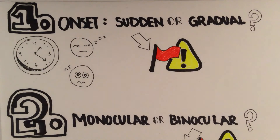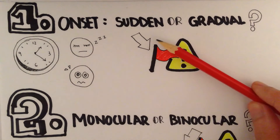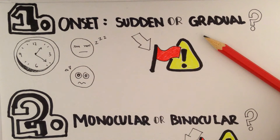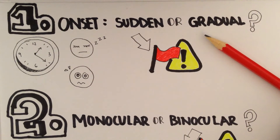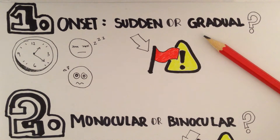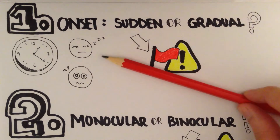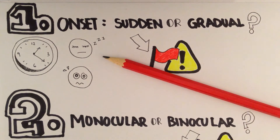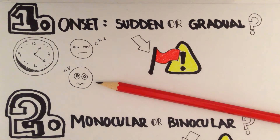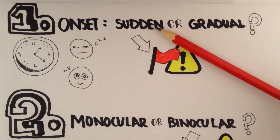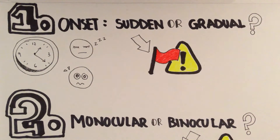First and foremost you need to think about the onset. Is it sudden or is it gradual? The time course here is very important. When did the patient first start experiencing the symptoms? Is the double vision something that's been happening for some time, for example when the patient's tired or after reading a book for several hours? Or is this something that happened recently, only a couple of days or hours ago, or for example after falling off my bike and hitting my head? In this case it's sudden that we're more worried about. This is our red flag and it's our warning sign.